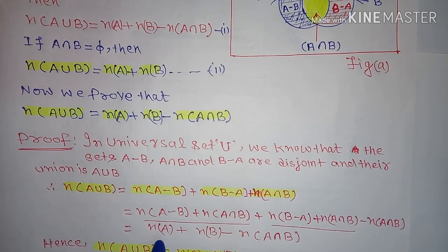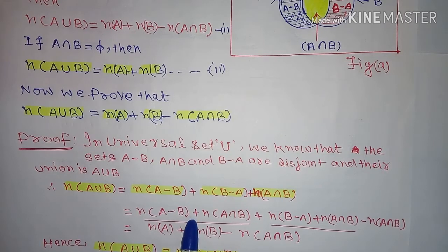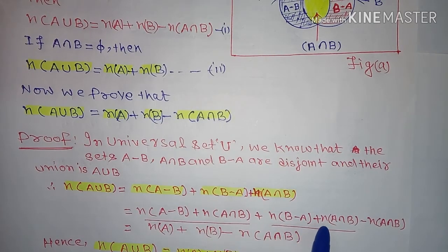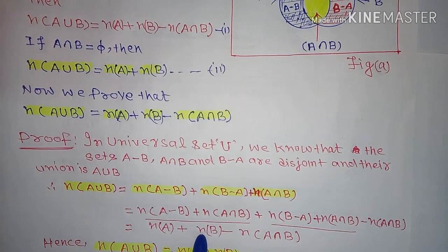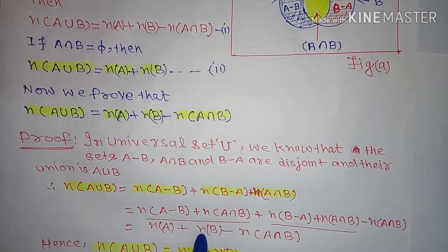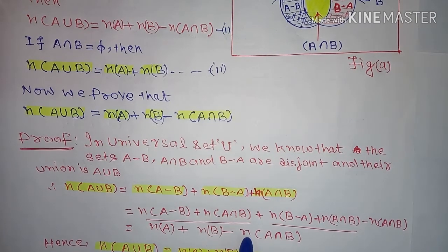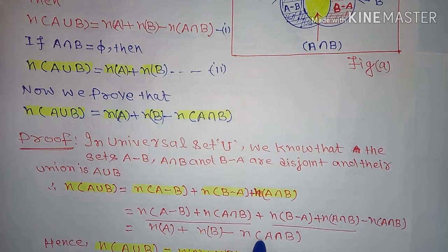This equals: number of elements in A minus B plus number of elements in A intersection B — which equals number of elements in set A — plus number of elements in B minus A plus number of elements in A intersection B — which equals number of elements in set B — minus number of elements in A intersection B. Thus the equation is proved.